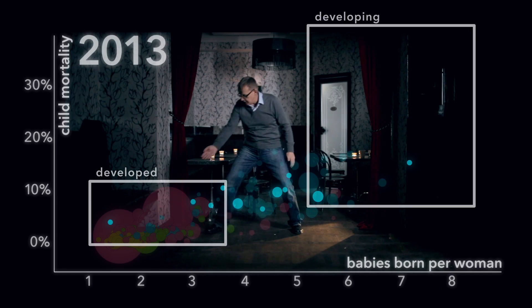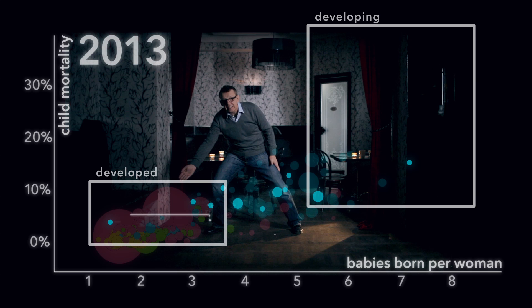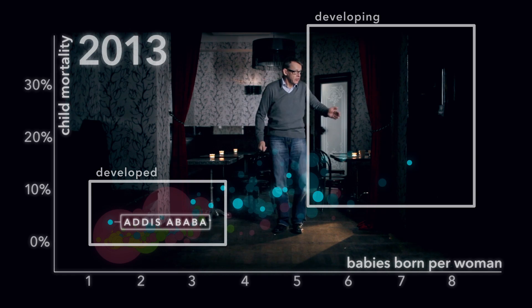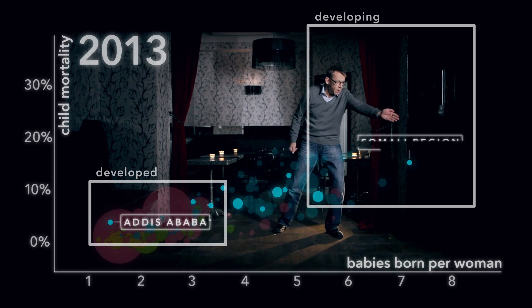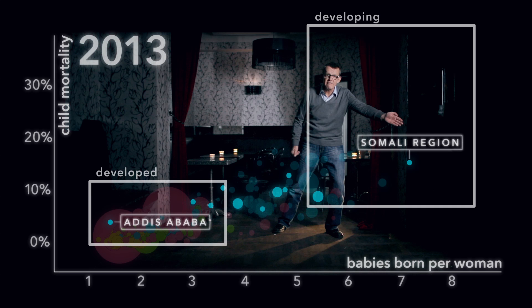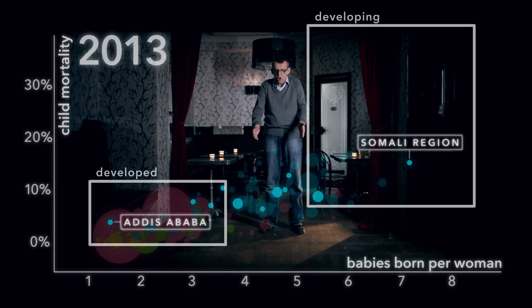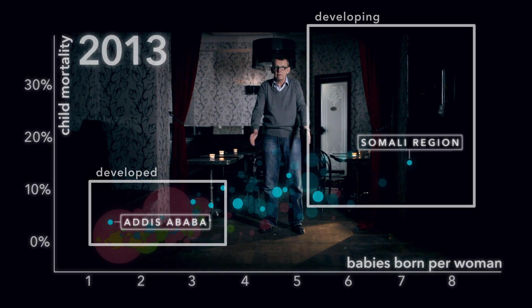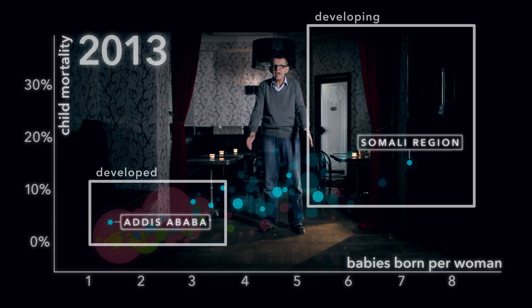Ethiopia has come halfway and is moving quickly down to this corner. But Ethiopia still faces many challenges. I will split the Ethiopian bubble. The capital, Addis Ababa, is already down here. But the remote Somali region of Ethiopia still has high child mortality. Most of the regions — 90% of the population — are centered around the average.